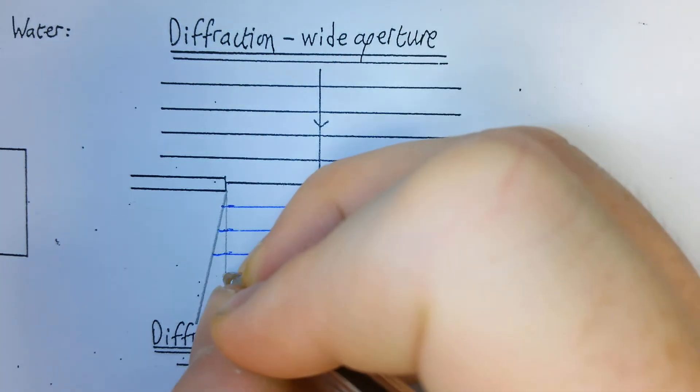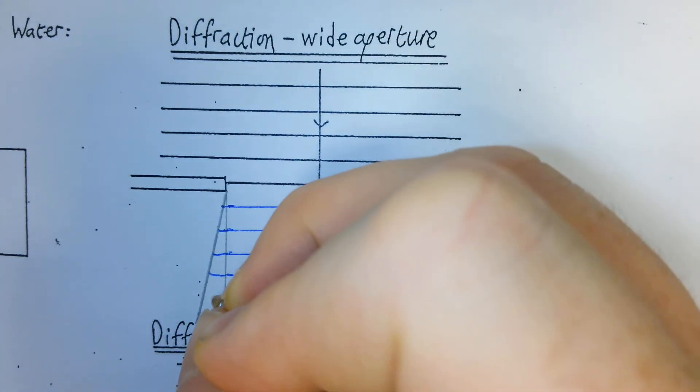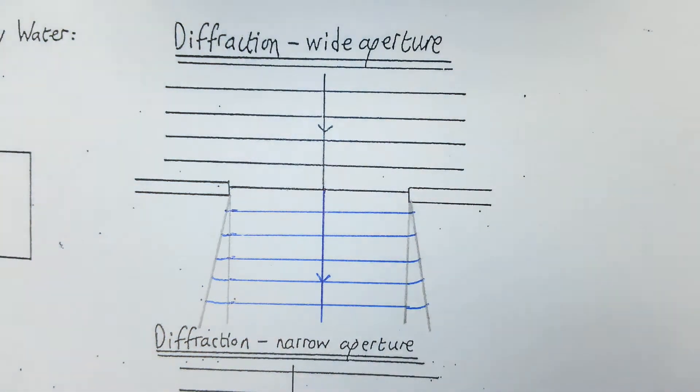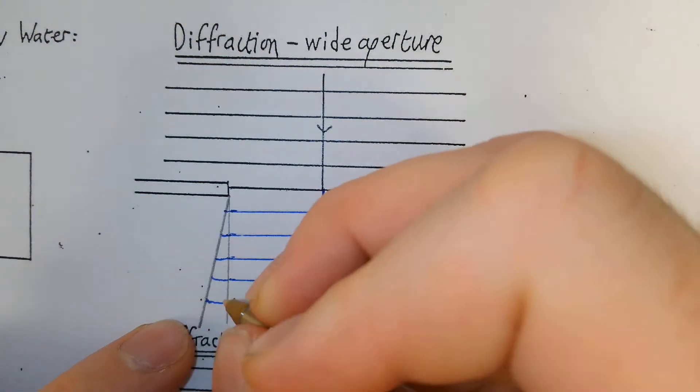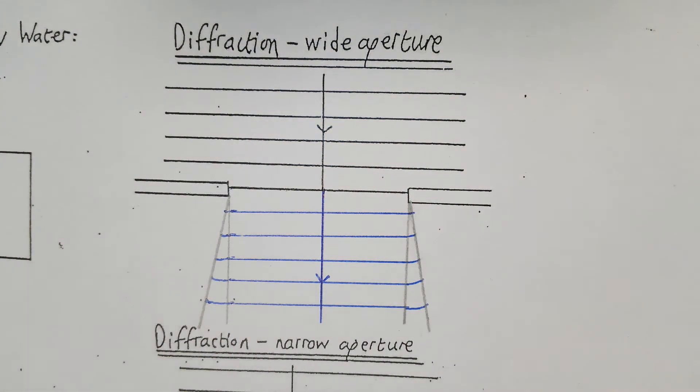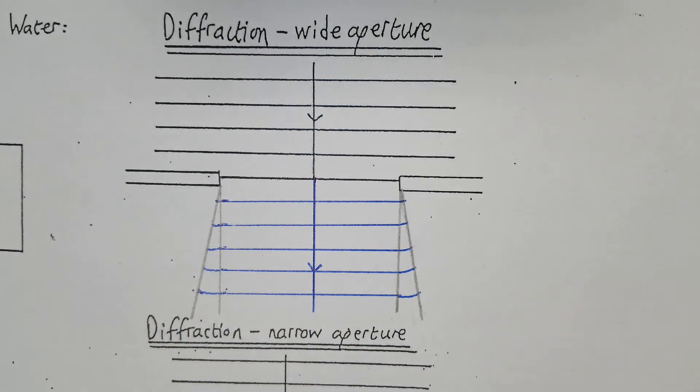Go around like that, just a small amount of curving. That's your small level of diffraction. That could have curved a little bit more, that's why I say you could do it in pencil then go over it. Just gives you a bit more room to change if it's not quite right.